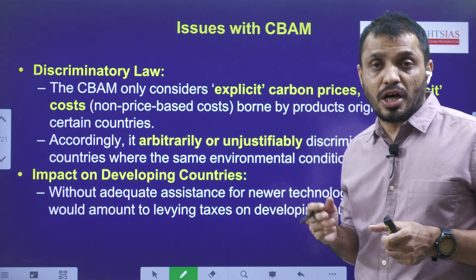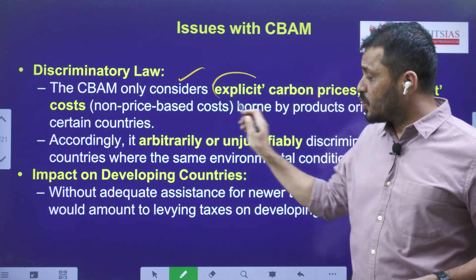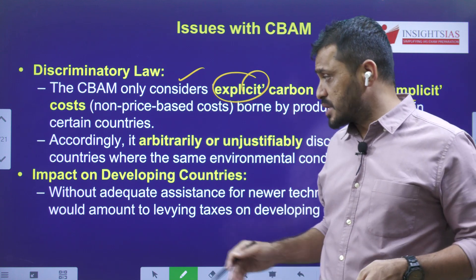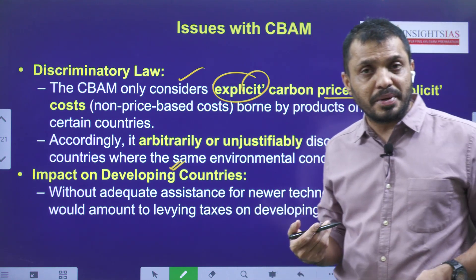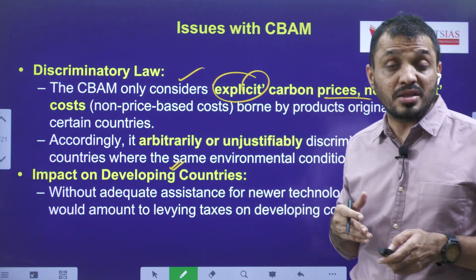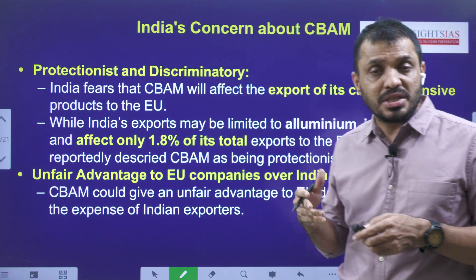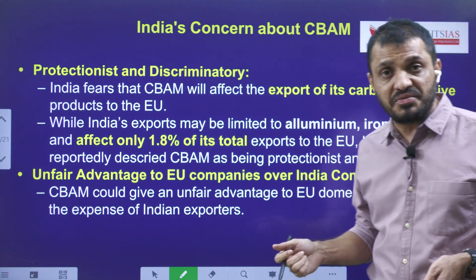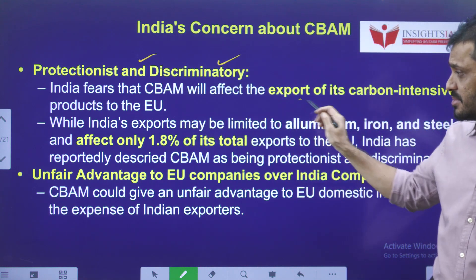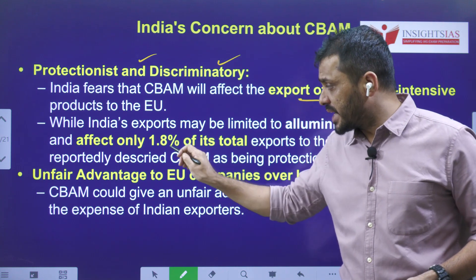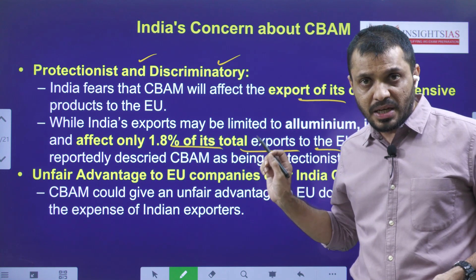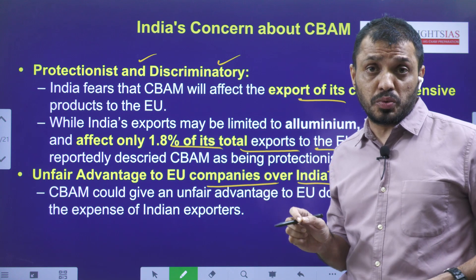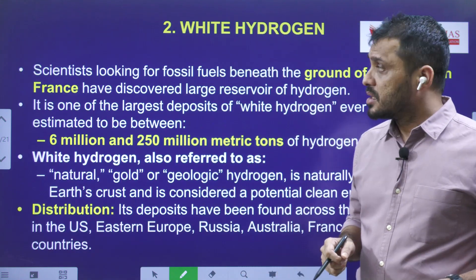There are certain issues with CBAM. Many countries argue it is discriminatory and only considers carbon prices, not implicit prices involved in making those products. It mainly impacts developing countries, where environmental norms are not as stringent and there is a lack of funds to adopt sustainable production methods. India views this mechanism as protectionist and discriminatory. Despite these challenges, only 1.8% of India's total exports to the EU will be affected under CBAM, especially iron and steel. India also claims it gives undue advantage to European companies.